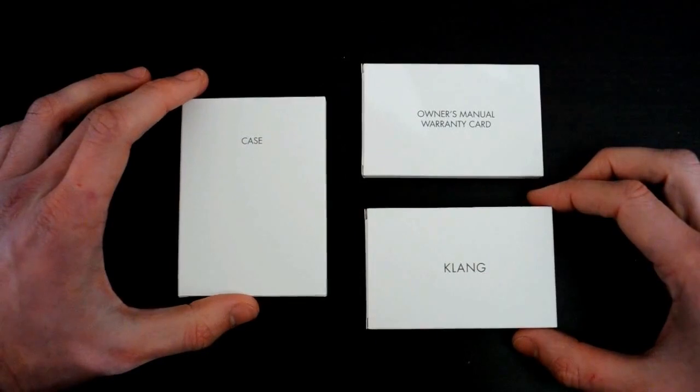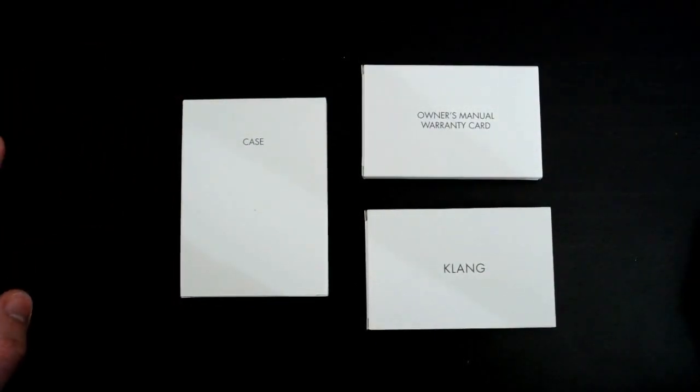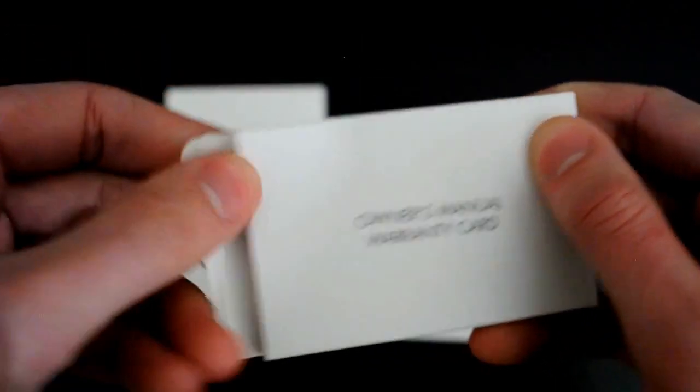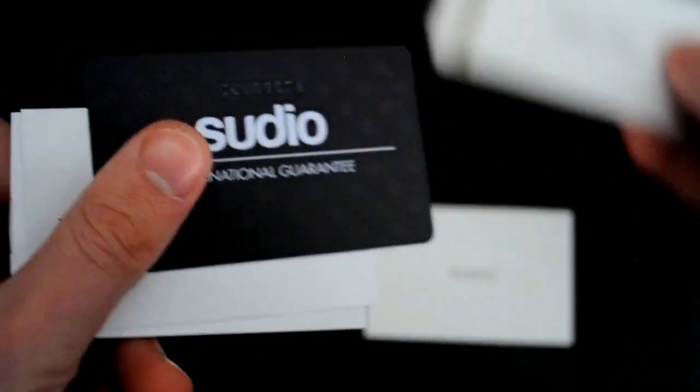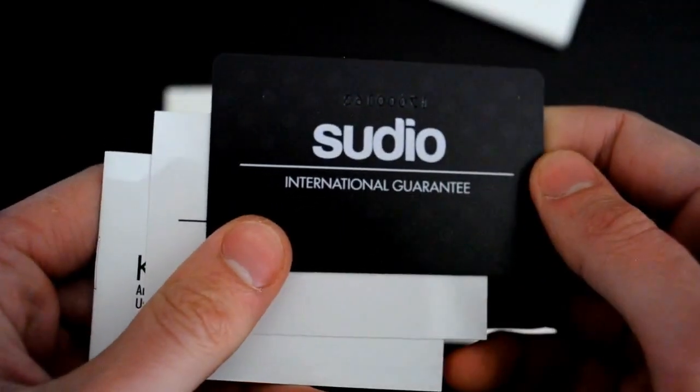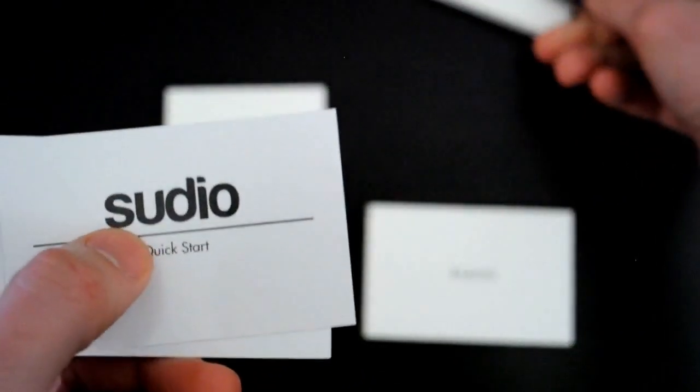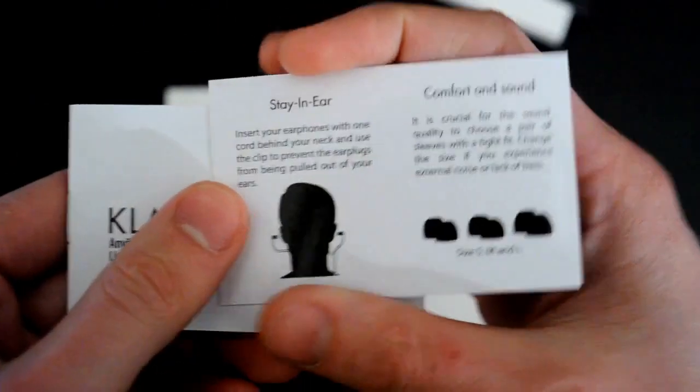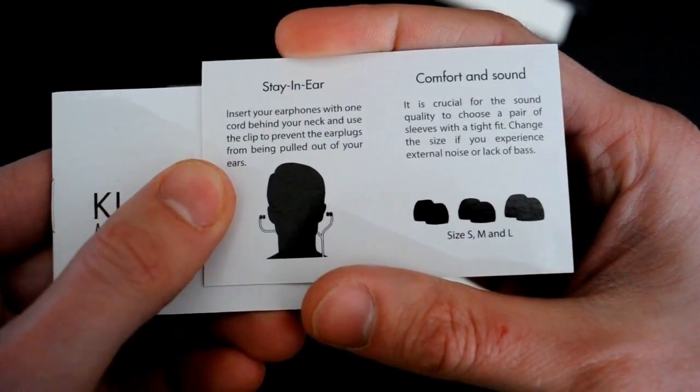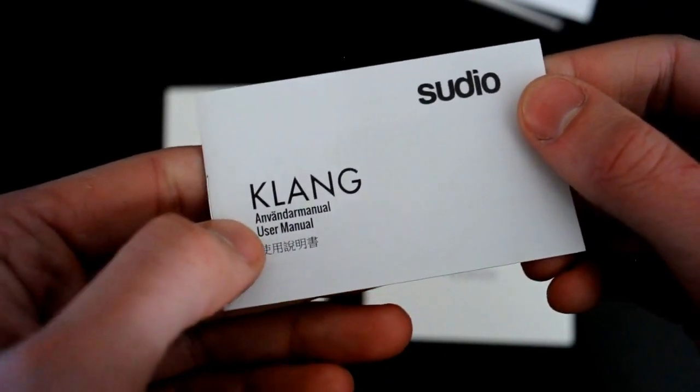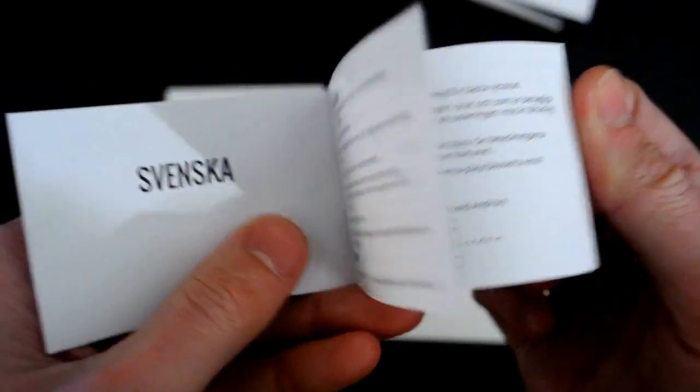Just to make it even more interesting to watch, I think we start with owner's manual and warranty card. Inside here we have three different pieces: the Sudio international guarantee card, looks really good. We have Sudio quick start, quick start to how to use them correctly, and also the user manual in three languages which is Swedish, English, and Chinese. Nice.